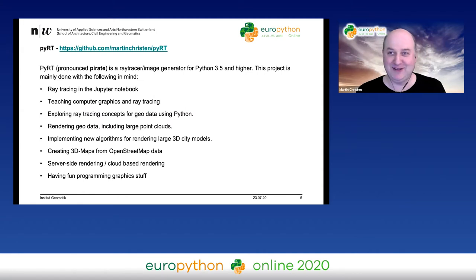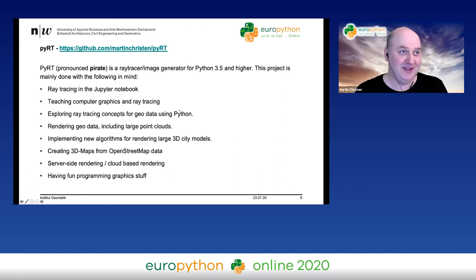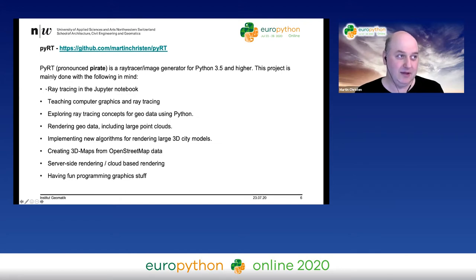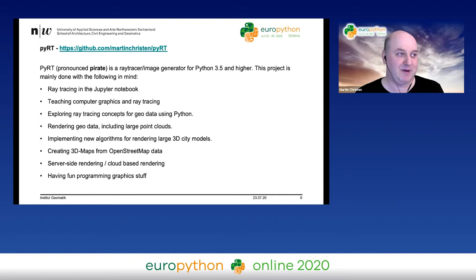But now I want to reinvent the wheel, so I created PIRATE. It's on GitHub, you can download it. It's a ray tracer and image generator, and you need at least Python 3.5. I want high-quality ray tracing in Jupyter notebooks, use it for teaching computer graphics and ray tracing concepts, and also visualize geodata using Python — including octrees, large point clouds, and large 3D city models.